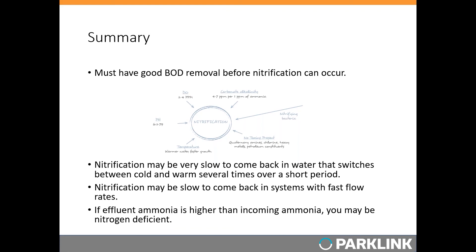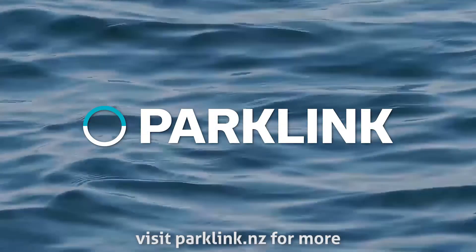Common signs of nitrogen deficiency include effluent ammonia higher than influent ammonia, the presence of bulky filaments such as Type 021N or Thiothrix causing bulking or high 30-minute settling, or sliming and high TSS from small, low-density flocs.